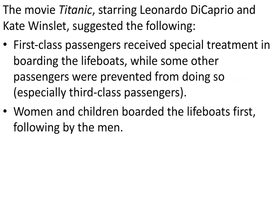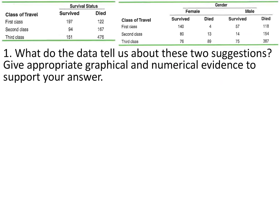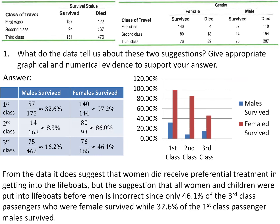The movie also suggests that women and children boarded the lifeboats first, followed by the men. Let's see if that is actually accurate. Looking at male and female survival rates by class: of the males in first class, only 32.6% survived, while 97.2% of the females survived. In second class, only 8.3% of the males survived, while 86% of the females survived. In third class, 16.2% of the males survived and 46.1% of the females.